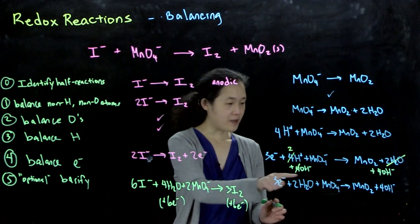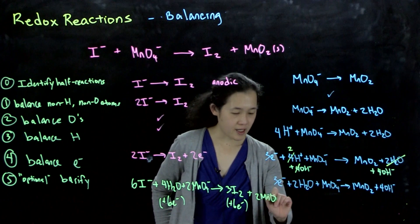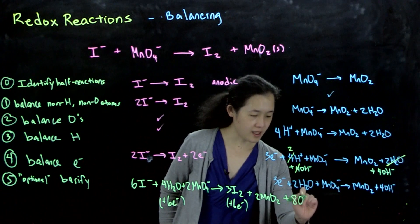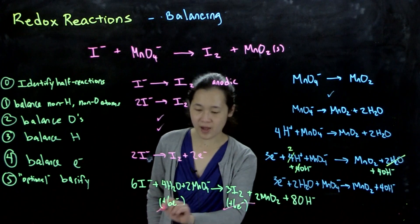Multiply this by three, multiply this by two, and then we'll get out to 3I₂ + 2MnO₂ + 8OH⁻. Again, we're just making sure that that balances out, kind of don't include the electrons.